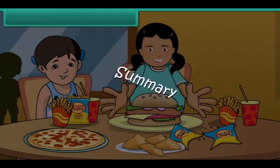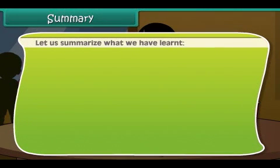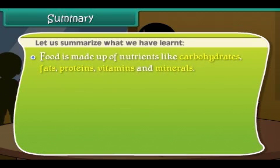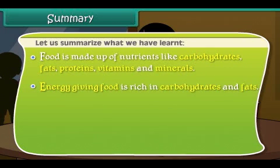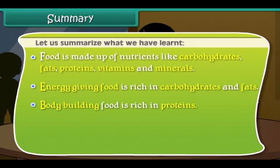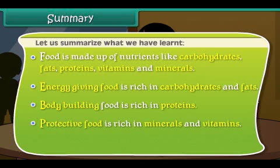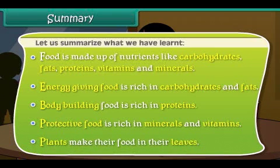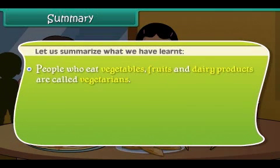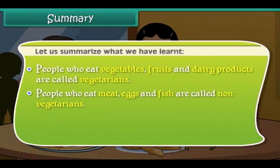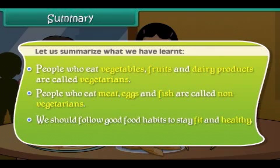Let us summarize what we have learned. Food is made up of nutrients like carbohydrates, fats, proteins, vitamins and minerals. Energy giving food is rich in carbohydrates and fats. Body building food is rich in proteins. Protective food is rich in minerals and vitamins. Plants make their food in their leaves. People who eat vegetables, fruits and dairy products are called vegetarians. People who eat meat, eggs and fish are called non-vegetarians. We should follow good food habits to stay fit and healthy.